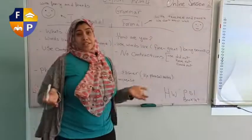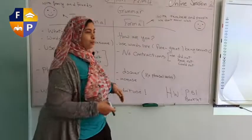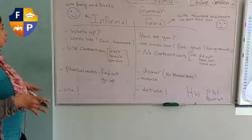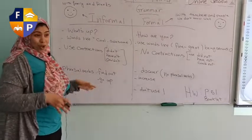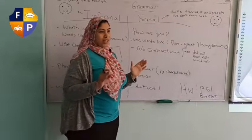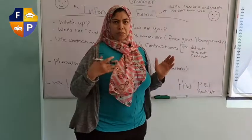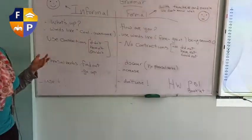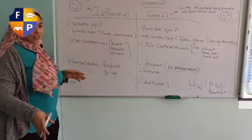So what is the difference? How can we differentiate between the two? When we are more relaxed, we can say for example: 'What's up?', 'How is it going?', 'How are you doing?' But in formal language we say 'How are you?' — we are being more serious. In informal language we can use words like 'cool' and 'awesome.'